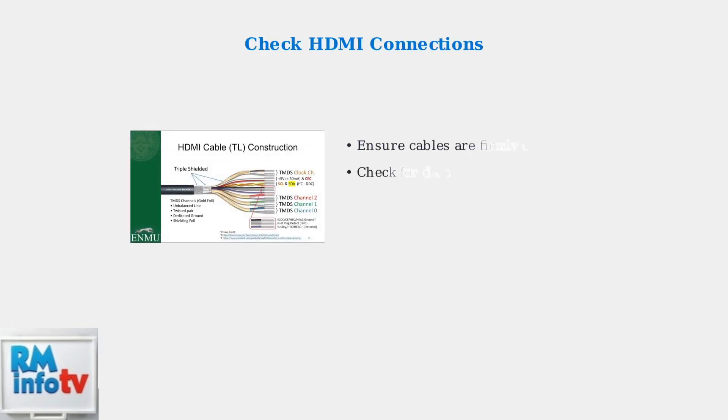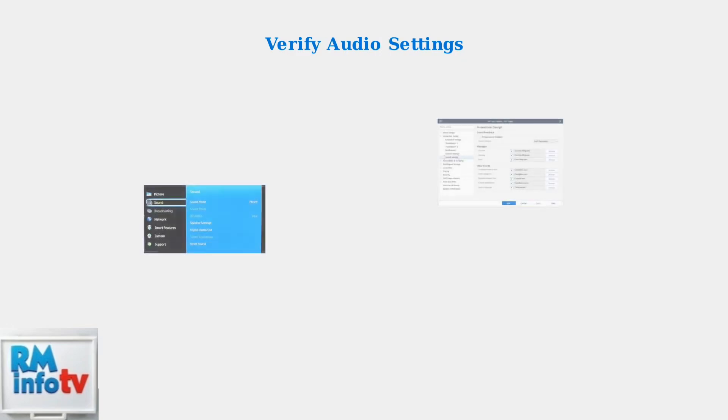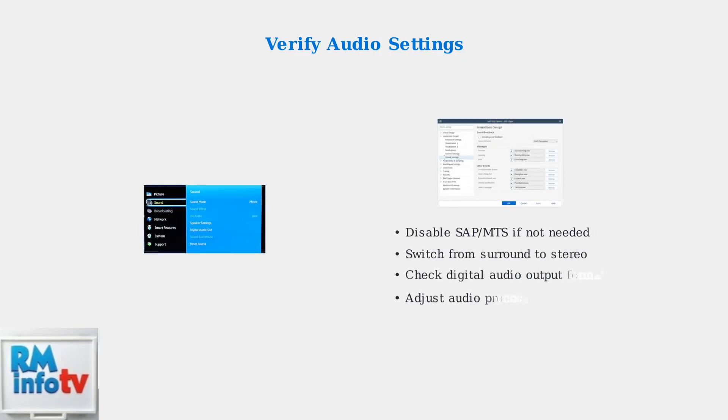First, check your HDMI connections to ensure they are secure and properly connected. A loose or faulty HDMI cable is often the culprit behind audio sync issues. Next, verify your TV's audio settings. Check SAP and MTS settings, and be aware that surround sound formats can sometimes introduce processing delays.